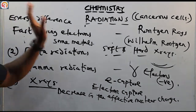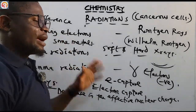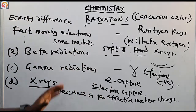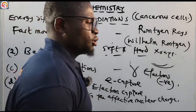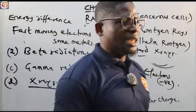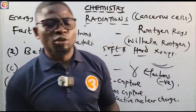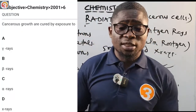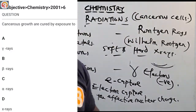So we have alpha, beta, gamma, and x-rays as the four types of radiation, and we've seen how x-rays come about. In the next episode we are going to look at detection of radiation.